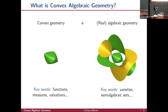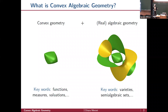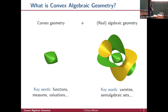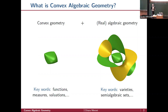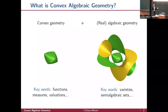Semi-algebraic sets behave very well with respect to many operations: you can project them and still get a semi-algebraic set, or the boundary of a semi-algebraic set is semi-algebraic again. We will call a convex body semi-algebraic in R^n if it is a semi-algebraic set. Once we define semi-algebraic sets, we can also say what a semi-algebraic function is: a function is semi-algebraic if its graph, or equivalently its epigraph, is a semi-algebraic set.